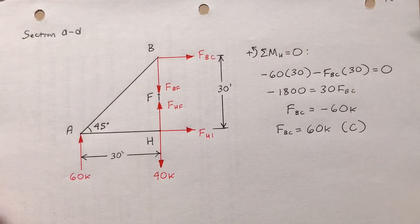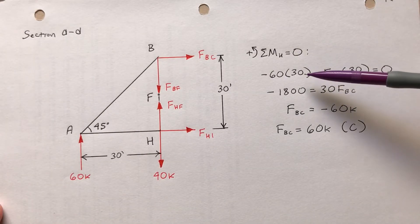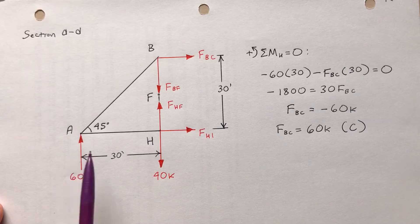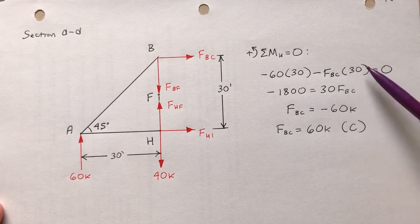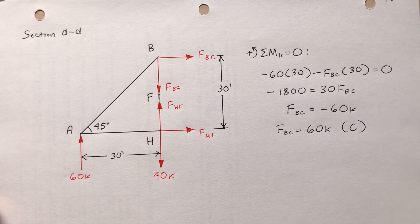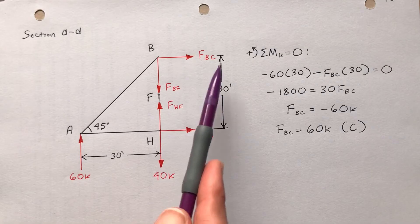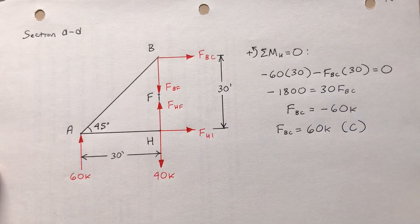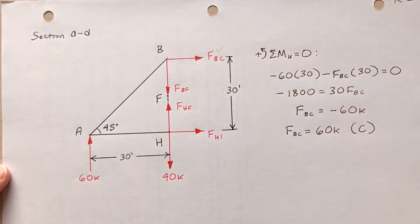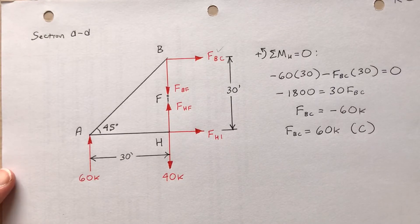Okay, so the sum of the moments about point H is zero. Negative 60 times 30. I'm talking about this 60 with a moment arm of 30. Minus F_BC times 30. Those both tend to want to go clockwise the way that I've drawn it. F_BC times moment arm 30. So I find F sub BC is 60 kips. So the force in bar BC is 60 kips in compression.